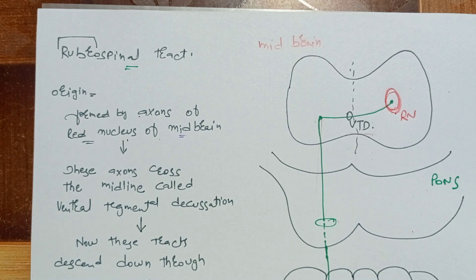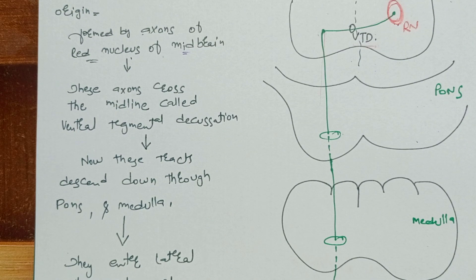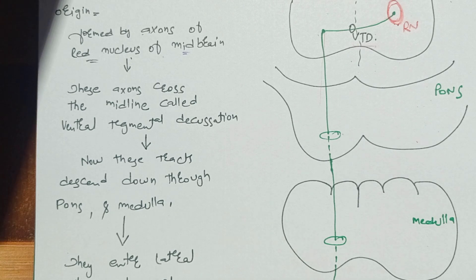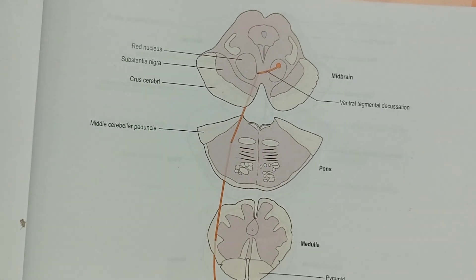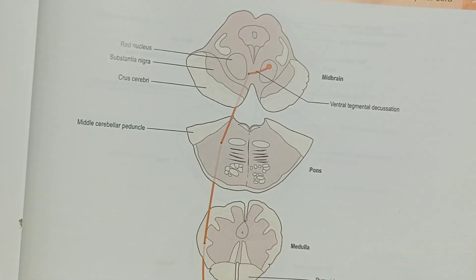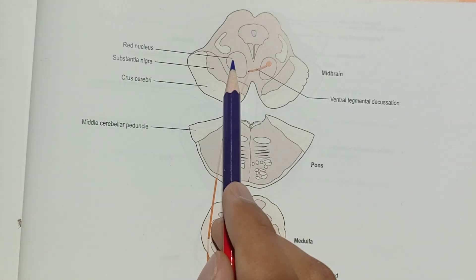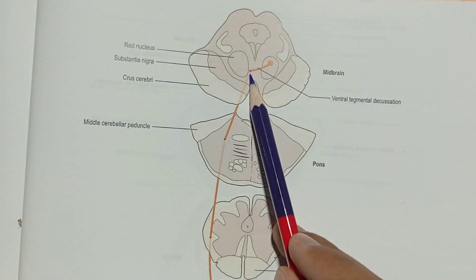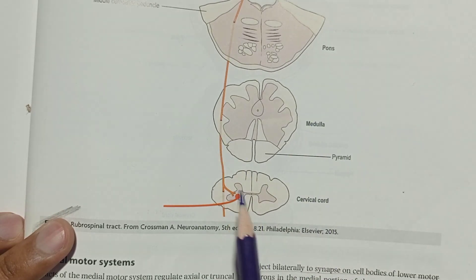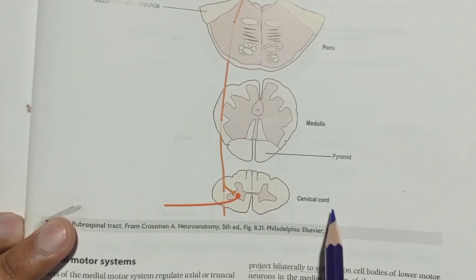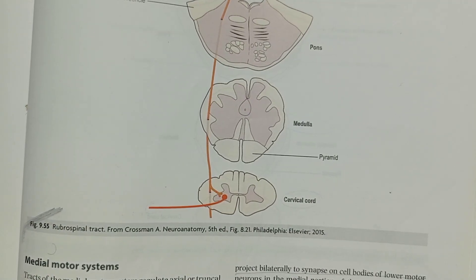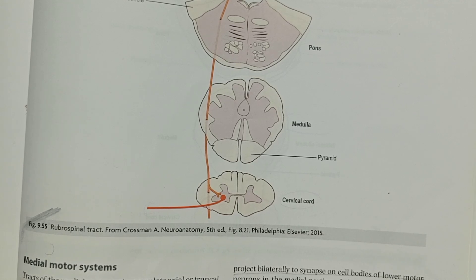In the next lecture I will teach you about the tectospinal tract. Before that, I will show you the diagram of the rubrospinal tract from Gray's Anatomy, since the BDC doesn't have one. As you can see: it originates in the red nucleus of the midbrain, moves to the opposite side via ventral tegmental decussation, descends through the pons and medulla, enters the lateral white column of the spinal cord, and reaches the anterior horn cells — in the cervical regions. Thank you very much, keep revising.